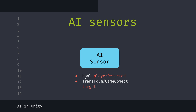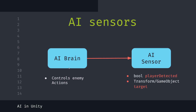All we need is a bool flag — something like 'player detected' — that will inform us if we have detected a player or not, and a transform reference or game object reference called 'target' to direct our enemy to move toward the target. To use this sensor class we would need an AI brain class — a high-level class that controls enemy actions like moving or shooting and has access to our AI sensors, allowing us to reuse sensors for different enemies. This gives us a modular approach to creating our AI.